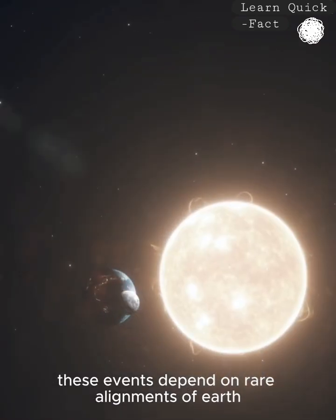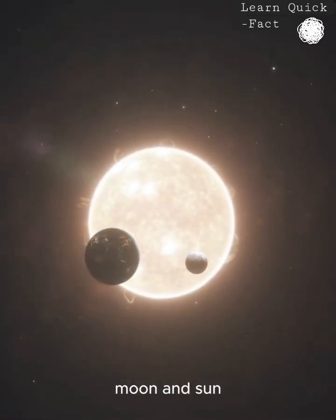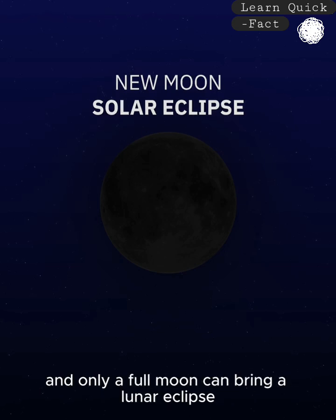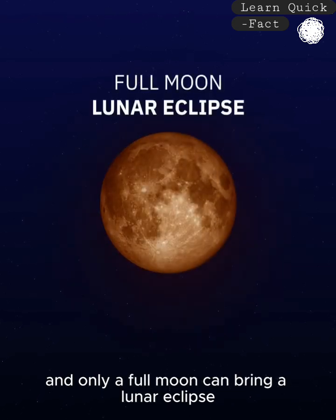These events depend on rare alignments of Earth, moon, and sun. Only a new moon can bring a solar eclipse, and only a full moon can bring a lunar eclipse.